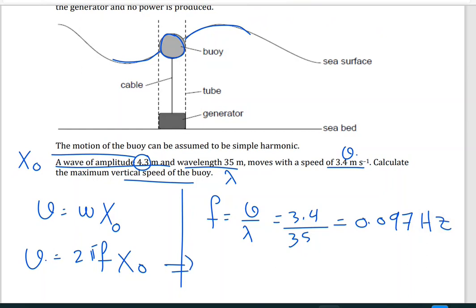So from here, we can find the velocity. The vertical velocity, it will be 2 pi times the frequency, which is 0.097, times X-naught 4.3, and this will give us 2.6 meters per second.